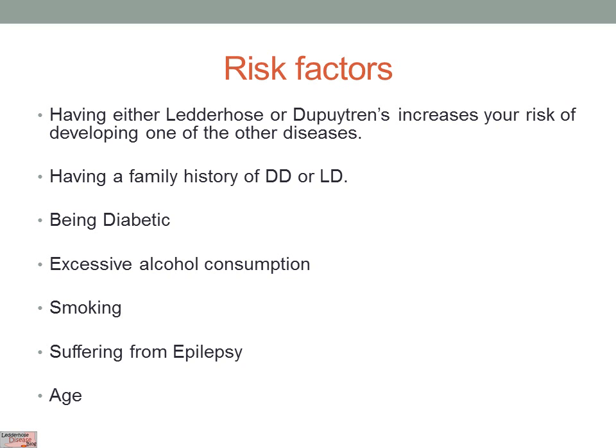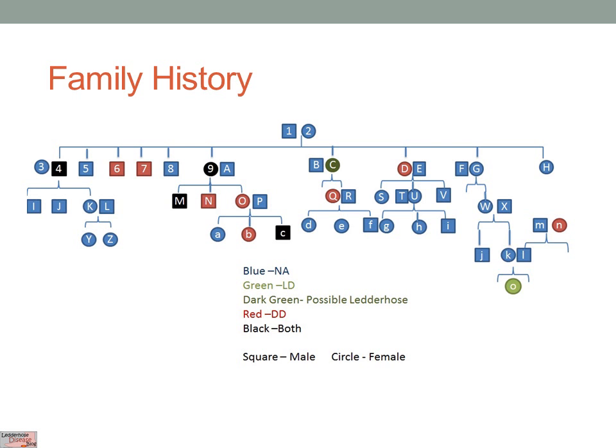Just having either of these two diseases increases your risk of developing the other. Equally, having a family history of either disease increases your risk of getting either of them. Risk is also increased by being diabetic, excessive alcohol consumption, smoking, suffering from epilepsy, and as you get older you also have an increased risk.